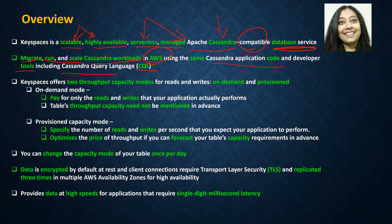Keyspaces offers two throughput capacity modes for reads and writes: on-demand and provisioned. For on-demand mode, you do not know what your capacity is going to be, so you just keep it on-demand and pay for whatever reads and writes your application does. You do not need to specify your table's throughput capacity in advance.